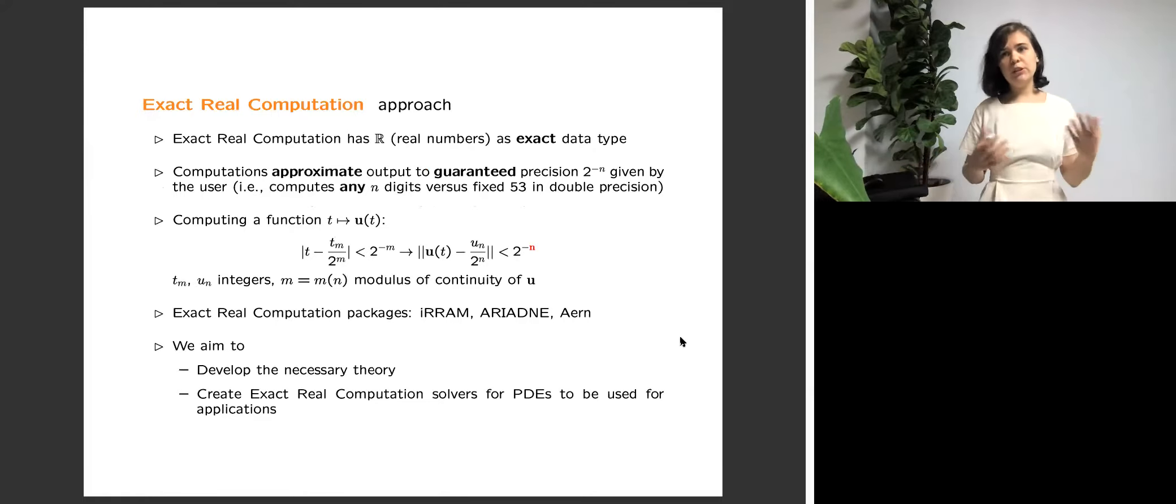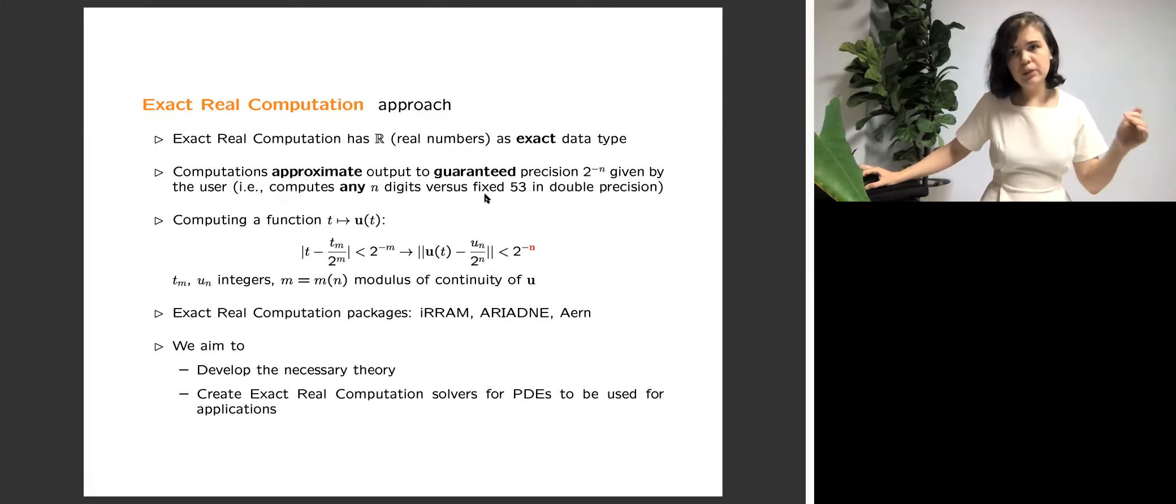So exact real computation approach actually aims to resolve this problem systematically and treat real numbers exactly. So what does it mean? Does it make any sense? Real numbers are infinite sequences of digits and computers have only finite amount of memory. Exact is understood in this sense that we want to compute with arbitrary given precision 2 to the power minus n. That means compute any n digits versus just 53 digits, and the n is given by the user. The program determines how many digits of the input we need to have and keeps track of the errors to obtain the result with the guaranteed prescribed precision 2 to the power minus n.